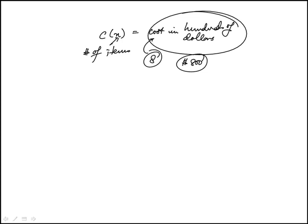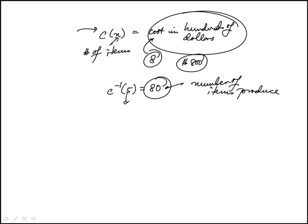We're told that according to this model, we see the following is the best interpretation of this inverse function. C inverse of 5 is 80. So what this means is that the output is going to be the opposite of this - this would be the number of items produced, and 5 would be the cost, but this cost will be in hundreds of dollars.